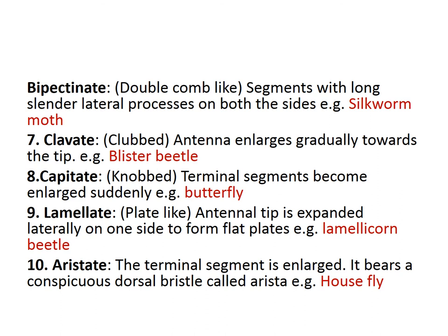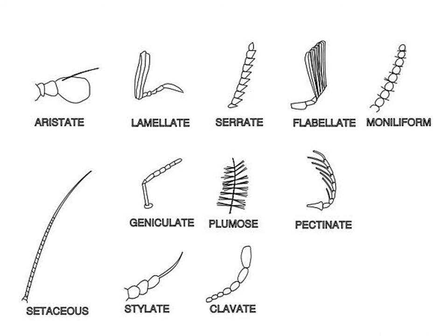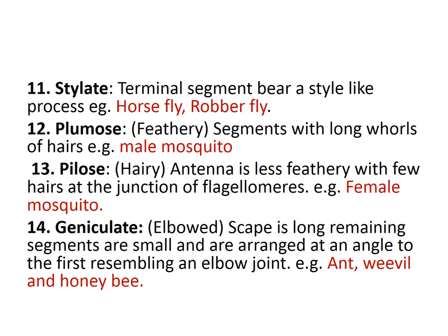Lamellate — the antennal tip is extended and expanded laterally on one side to form a flat plate, as in lamellicorn beetles. Aristate — the terminal segment is enlarged and bears a conspicuous dorsal bristle called the arista, as in housefly. Stylate — the terminal segment bears a style-like process, as in robber fly. Plumose is feathery — segments have long whorls of hairs, as in mosquitoes. Pylose is less feathery with two hairs at the junction of flagellomeres, as in female mosquitoes. Geniculate is elbowed — the scape is long and the remaining segments are small, arranged at an angle resembling an elbow joint, seen in ants, weevils and honeybees.